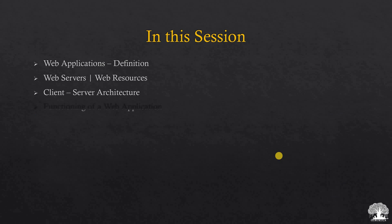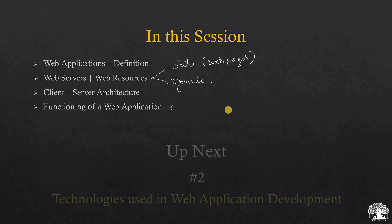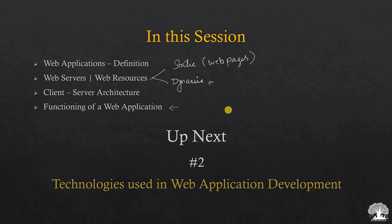In this session we spoke about the definition of a web application, web servers and their resources — two types: static resources like banking web pages, and dynamic resources like login and fund transfers which vary user to user. We also discussed client-server architecture and how information is exchanged between client and server, and the basic functionality of a web application. In the next video we will talk about the major technologies used in web application development. Stay tuned to Gurukula — I'll see you in the next video. Until then, bye from Jai and happy learning!